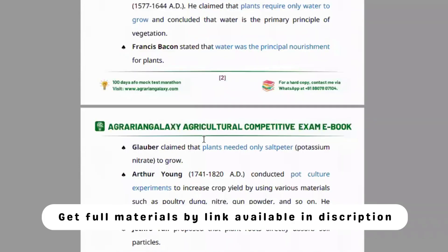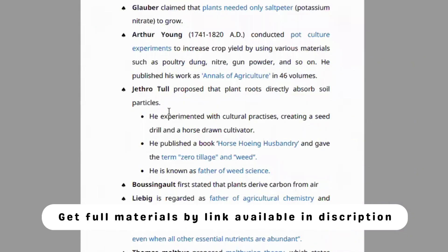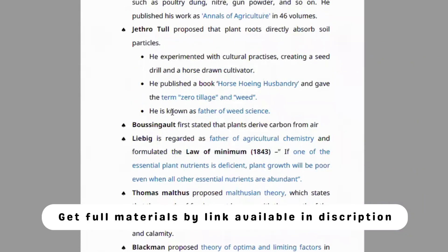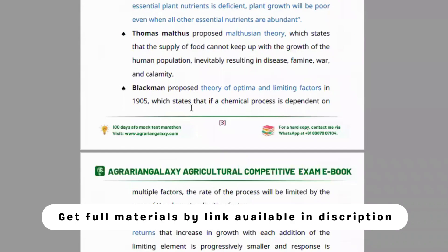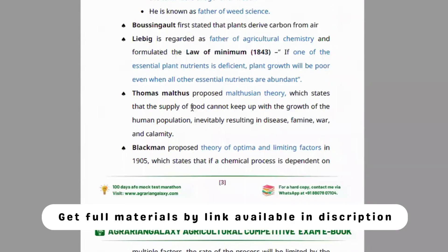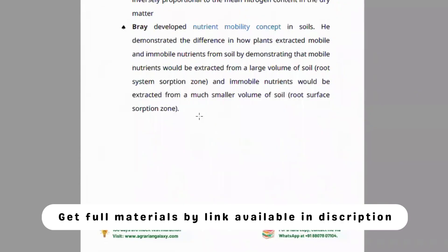There is a clear explanation of what scientists discovered in agronomy, like Jethro Tull, Bausinkel, and Leibach. Each content and law is clearly explained — what is the law of minimum and everything is explained in module one.